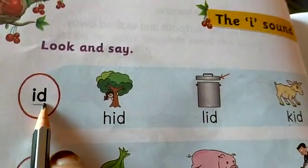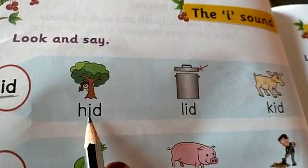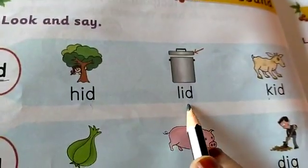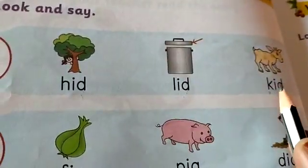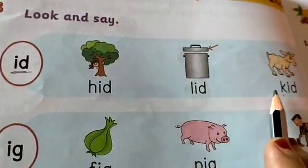See here, I d. With I d, we are making here three words. H I d, hide. L I d, lid. K I d, kid. Hide, lid, kid.